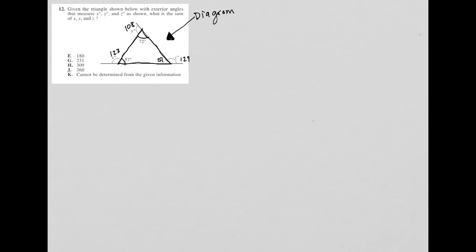There's no other angle here that I need to know. So let's read the question. Given the triangle shown below with exterior angles that measure X, Y, and Z as shown, what is the sum of X, Y, and Z?